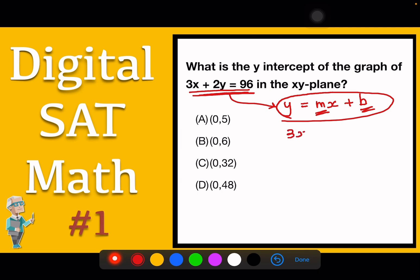We can first write it down, 3x plus 2y equals 96. And then we will move 3x to the other side of the equation. So 2y equals 96 minus 3x. We can change it a little bit: 2y equals negative 3x plus 96.